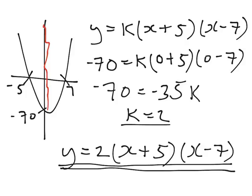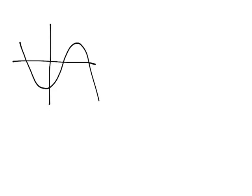So let's extend it. Just take that last example and extend it to a cubic. So if we've got a cubic that looks a bit like this, we've got negative 5, 7, and 10.